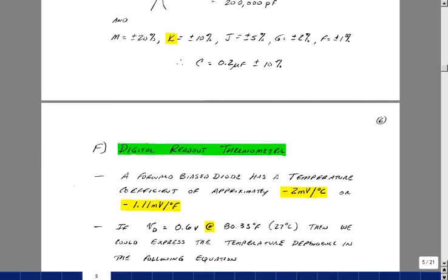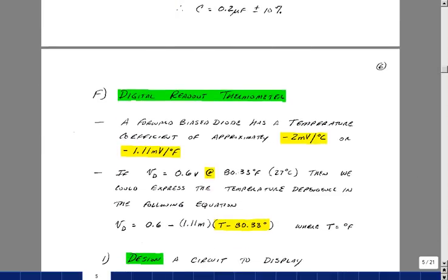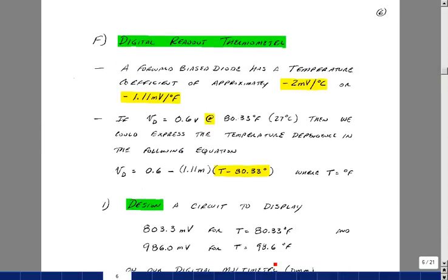The second circuit we're going to build in lab for lab 3 is a digital thermometer. This is actually based on an article that was in Popular Electronics some years ago, and this is also one of the supplemental problems in ECE 302.